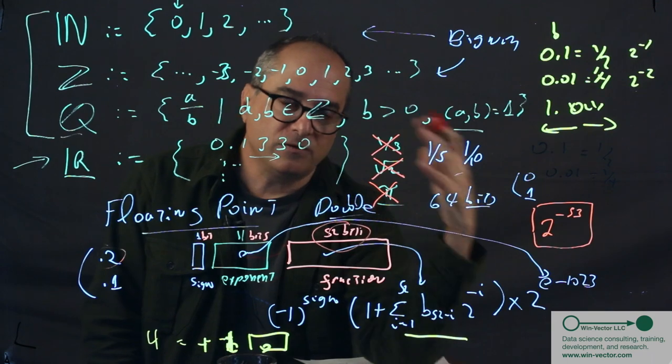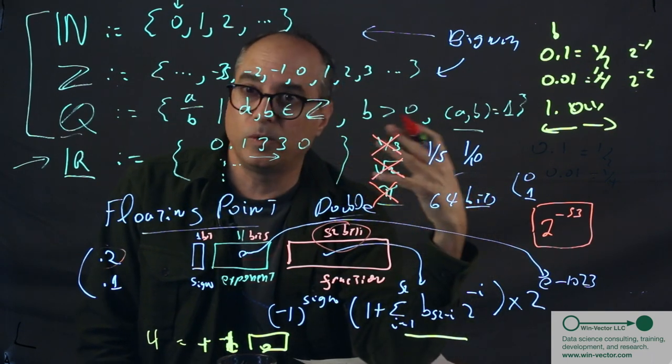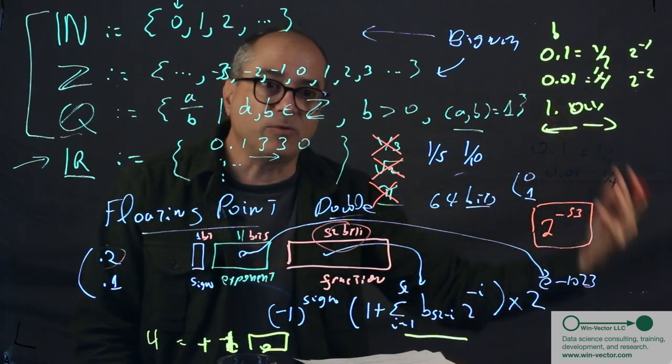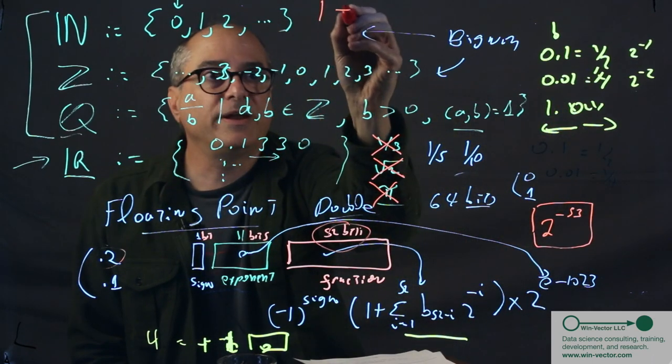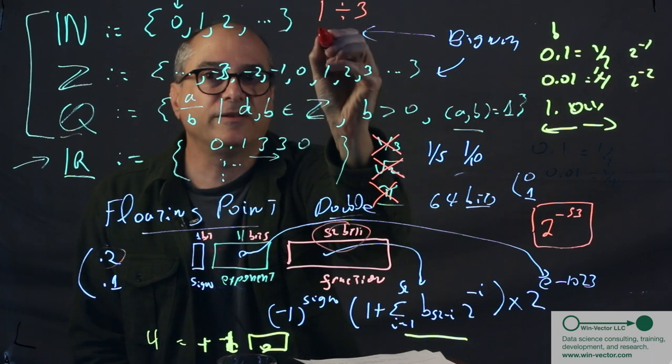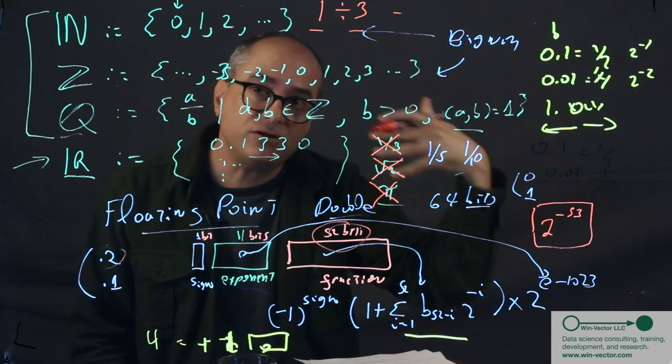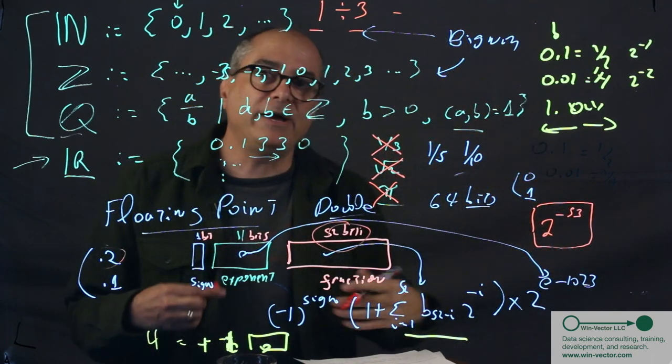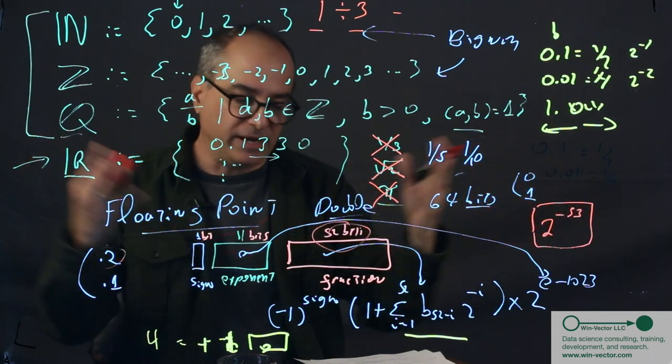Then, whenever you do a floating point calculation, even if the two floating point numbers were representable, the output might not be representable. For instance, we may not be able to form one divided by three. This is a representable floating point number. This is representable. The output is not representable. So at each floating point step, we might be accumulating error. That error might be getting bigger, or it might not.